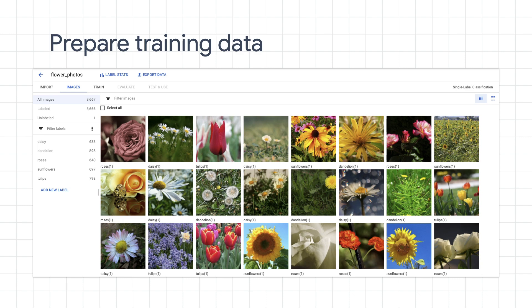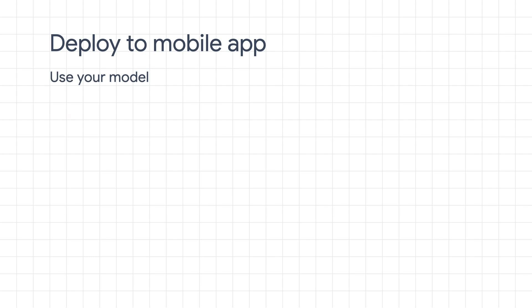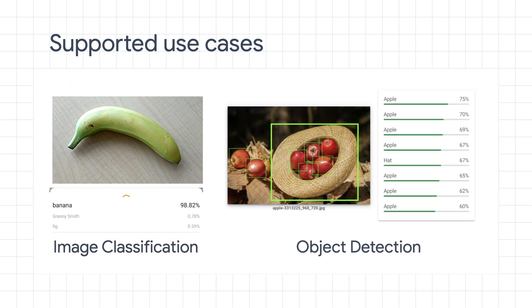In the first step, you just need to upload your training data to Google Cloud using this GUI, and then choose some configuration to train the model. For example, you can choose to train a model with higher accuracy but at a trade-off of a larger model size, or you can choose a smaller model which sacrifices some accuracy. Then after training, just download the TensorFlow Lite model and import it to your Android app using Android Studio — just like I showed you in the demo earlier, the model can be integrated into your app in just a few lines of code. AutoML currently supports two on-device machine learning use cases: image classification and object detection.